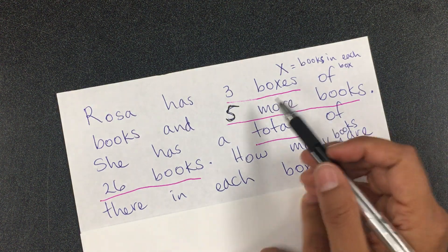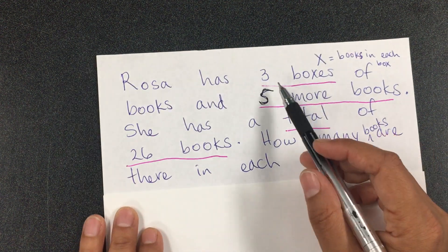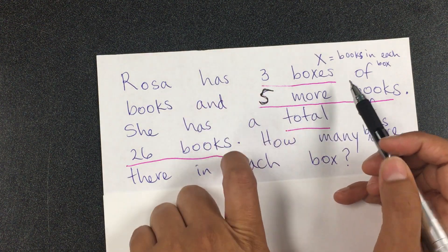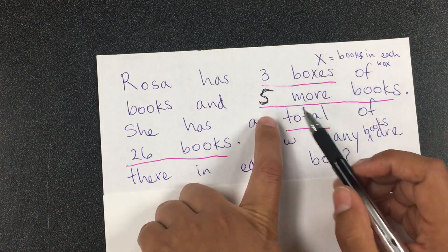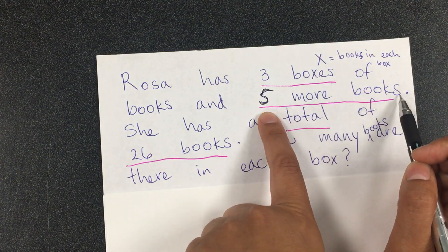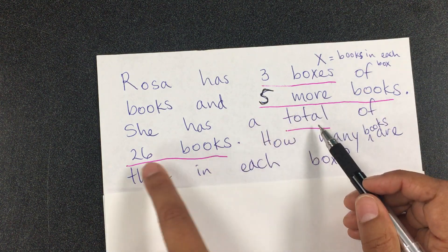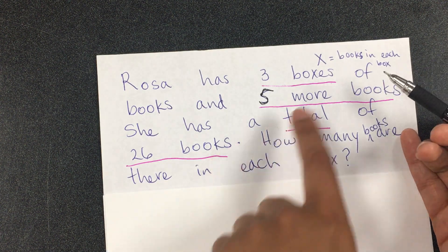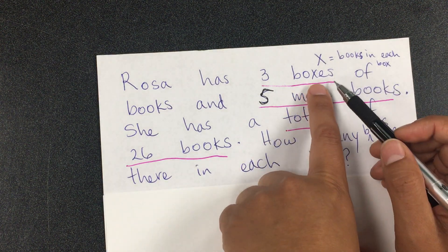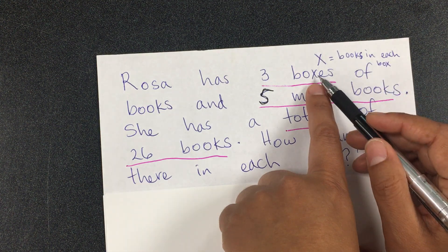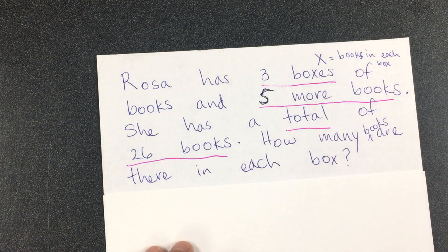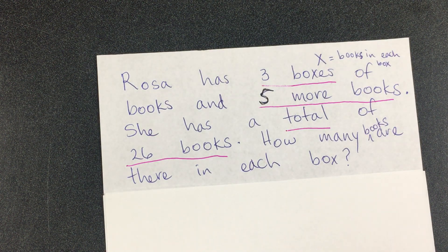I underlined the important information: three boxes of books, five more books, and the total is 26 books. We don't know how many books are in each box, so that will be X, because we don't know if there are 5, 10, 20 books in each box or more.